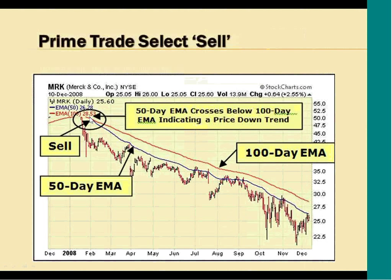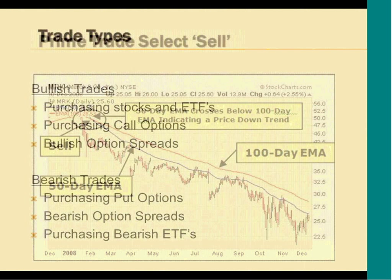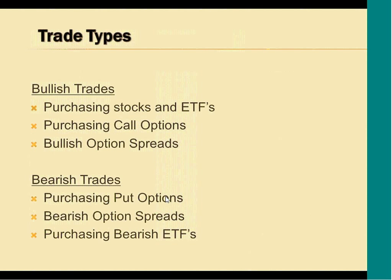Here's an example of a sell signal for Merck stock. The 50-day exponential moving average crossed below the 100-day, so Merck was on a sell signal. At this point you really don't know how long or how sustained the downtrend is going to be, so you want to consider exiting your long positions because you don't know how extensive the decline will be. When a sell signal is indicated, we want to be purchasing put options, bearish option spreads, and bearish ETFs. Today we're going to be looking at purchasing stocks and call options using Prime Trade Select.